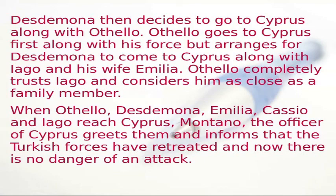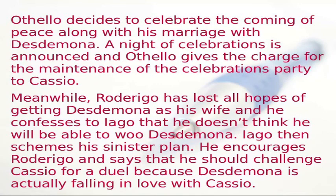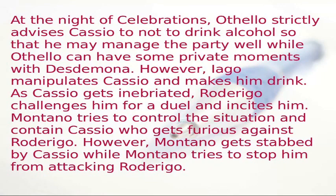Othello decides to celebrate the coming of peace along with his marriage to Desdemona, and a night of celebrations is announced. He gives charge of the celebrations party to Casio. Meanwhile, Rodrigo has lost all hope of getting Desdemona as his wife and confesses to Iago that he cannot woo her. Iago schemes his sinister plan, encouraging Rodrigo to challenge Casio to a duel, claiming Desdemona is falling in love with Casio. Othello strictly advises Casio not to drink alcohol, but Iago manipulates Casio into drinking.